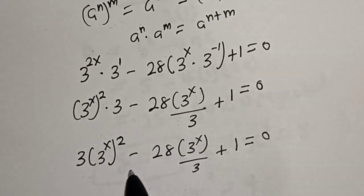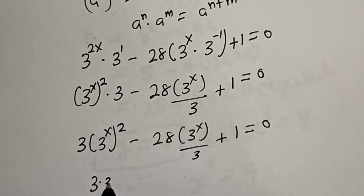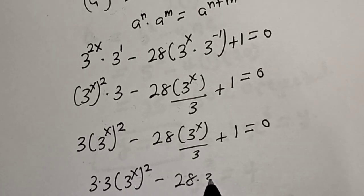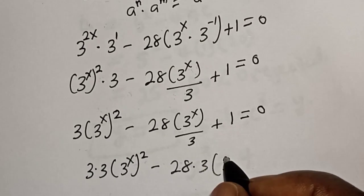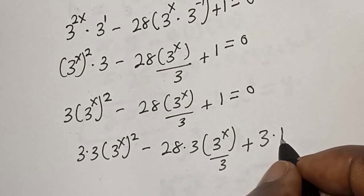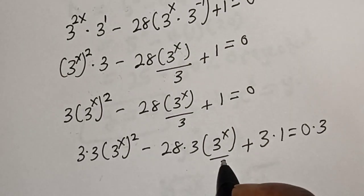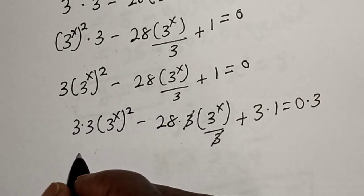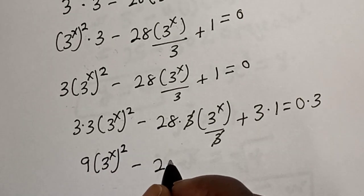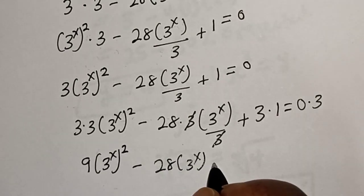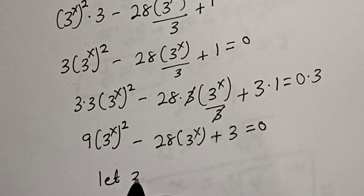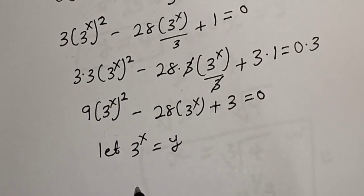Let's multiply all terms by 3. We have 9 bracket 3 raised to power s, squared, minus 28 bracket 3 raised to power s, plus 3, is equal to 0. Now let T, where 3 raised to power s, is equal to y.